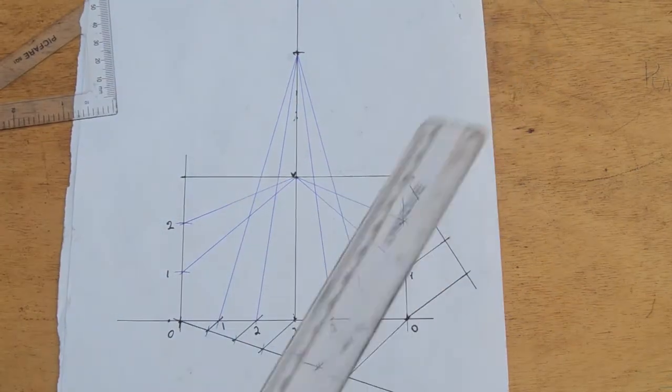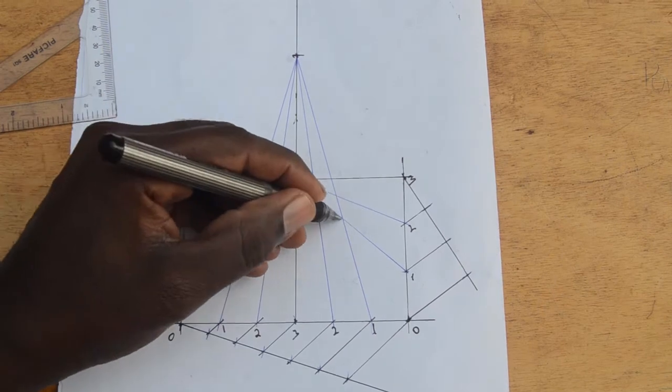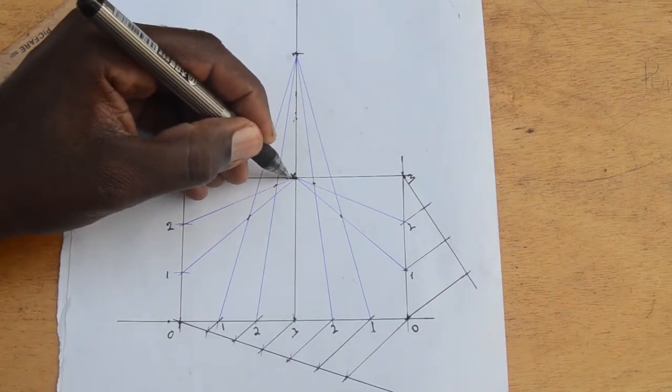Mark off the points where the corresponding lines intersect and join them to get your hyperbola.